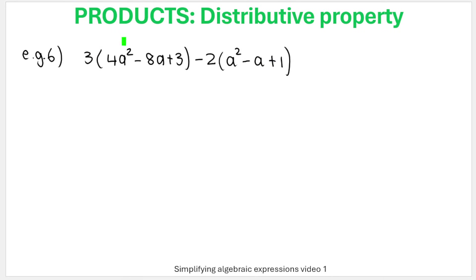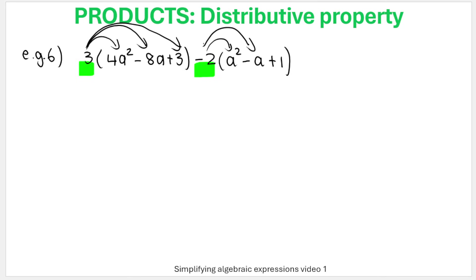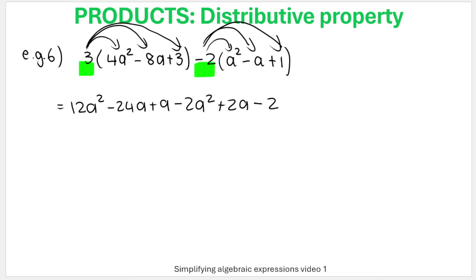In the last example, we have something outside the first bracket and something outside the second bracket. Multiply 3 into the first bracket across all three terms, and multiply negative 2 into the second bracket across all three terms. Then combine like terms: 12A squared minus 2A squared gives 10A squared; negative 24A plus A plus 2A gives negative 21A; and then minus 2.